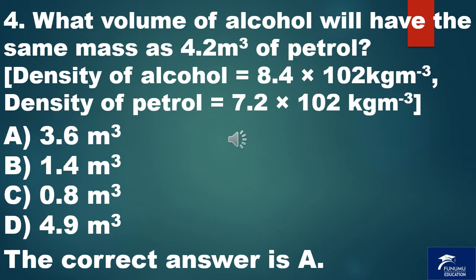Question 4. What volume of alcohol will have the same mass as 4.2 meter cube of petrol? Density of alcohol equals 8.4 times 10² kilogram meter raised to minus 3. Density of petrol equals 7.2 times 10² kilogram meter raised to minus 3. A. 3.6 meter cube. B. 1.4 meter cube. C. 0.8 meter cube. D. 4.9 meter cube. The correct answer is A.